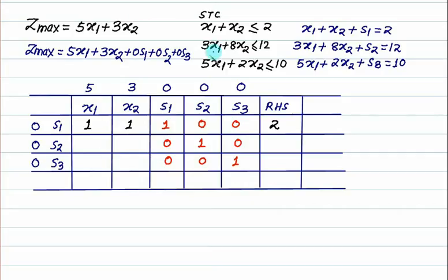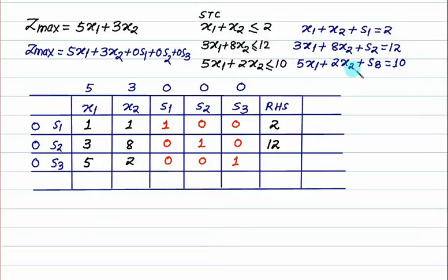For the second constraint row we have 3x1, 8x2, 0 for s1, 1 for s2, 0 for s3, and right-hand side is 12. For the third constraint row we have 5x1, 2x2, 0 for s1, 0 for s2, 1 for s3, and right-hand side is 10. That is the initial simplex tableau.